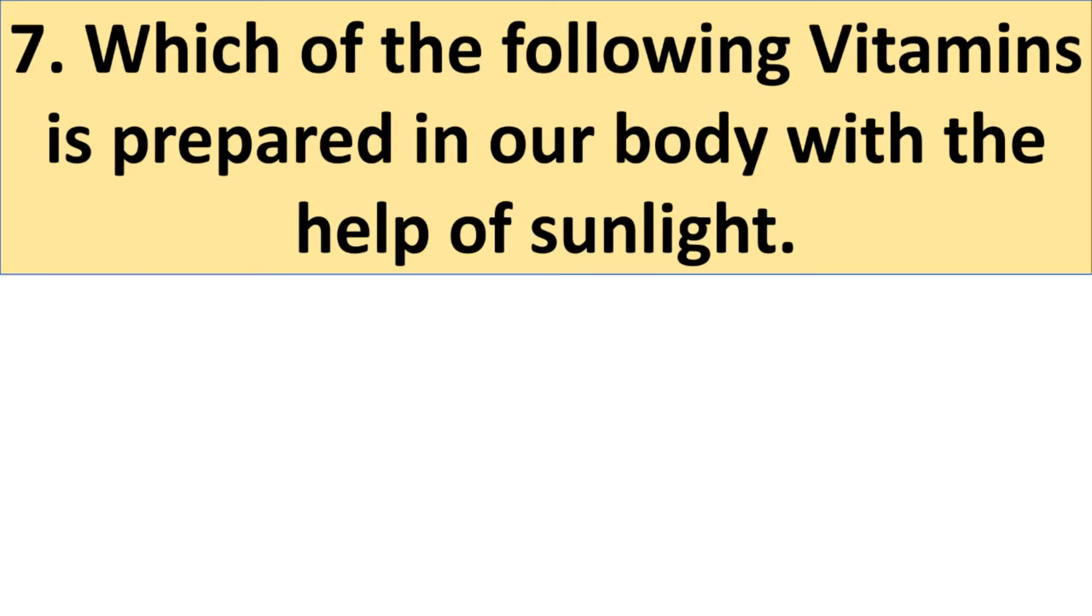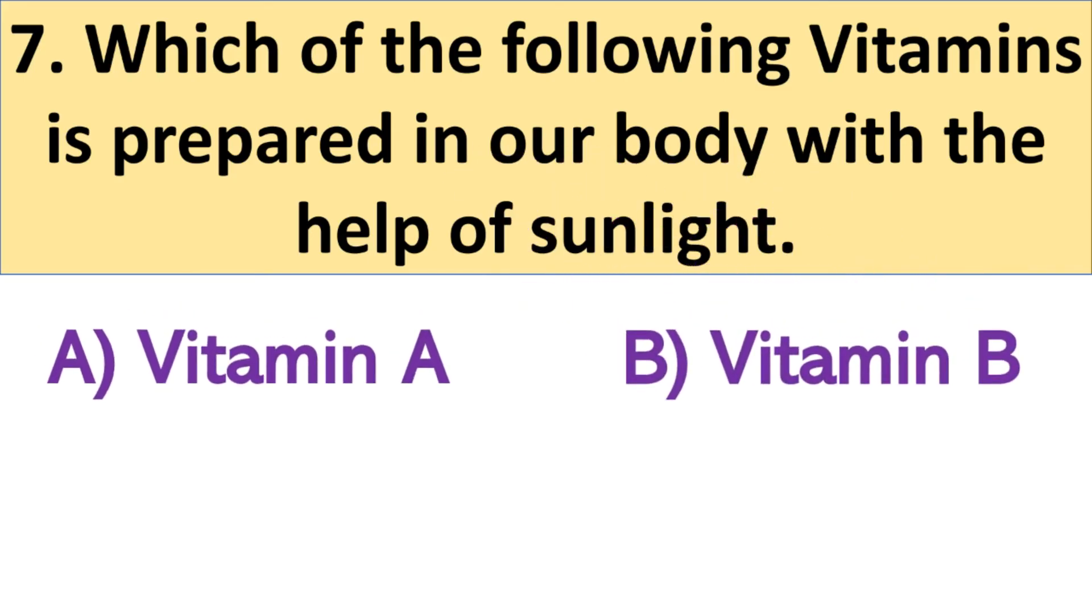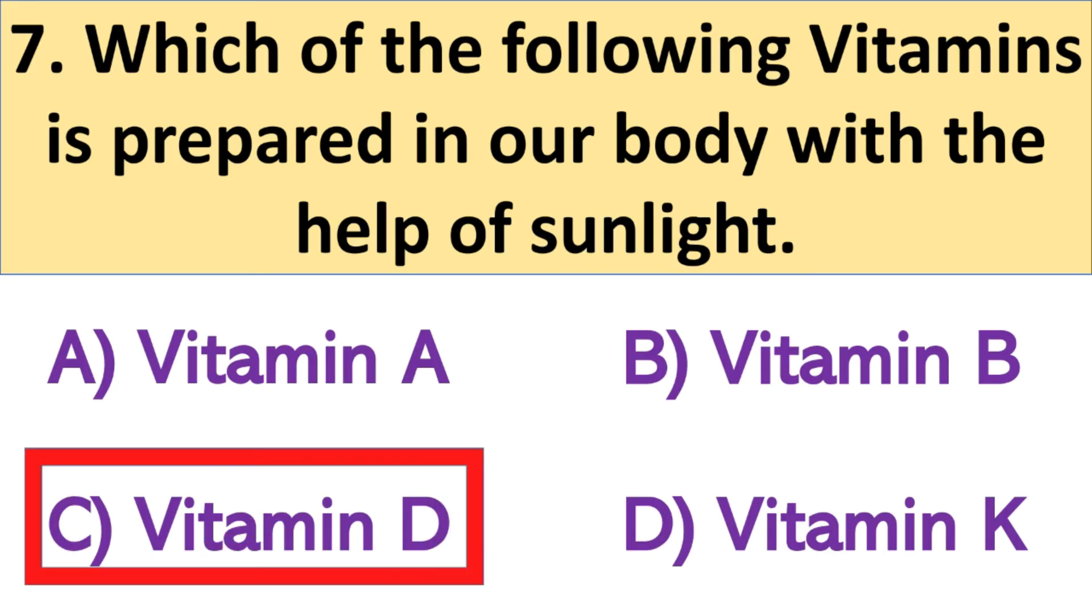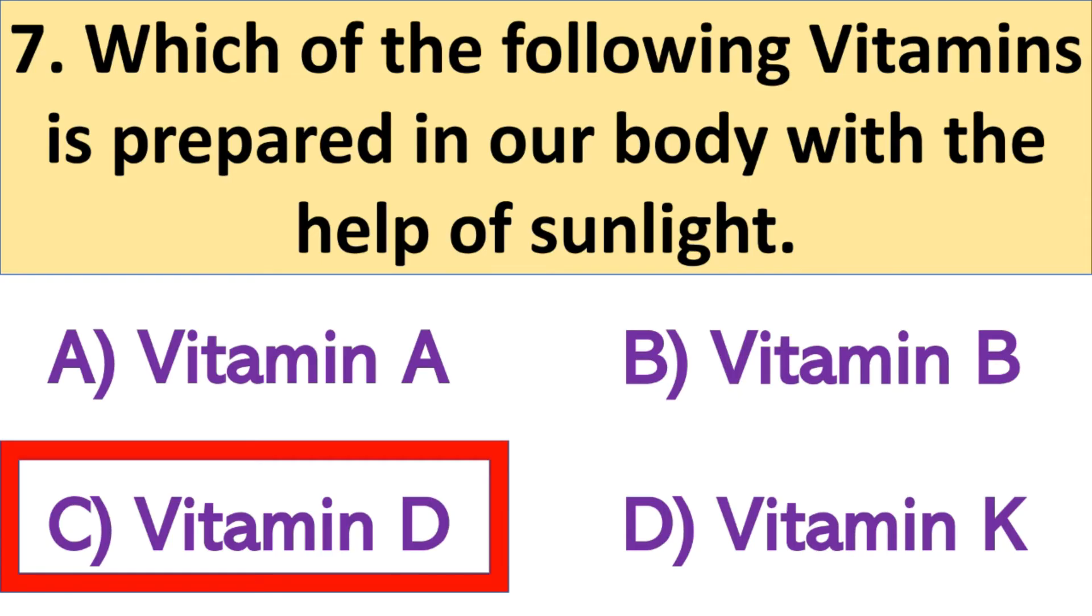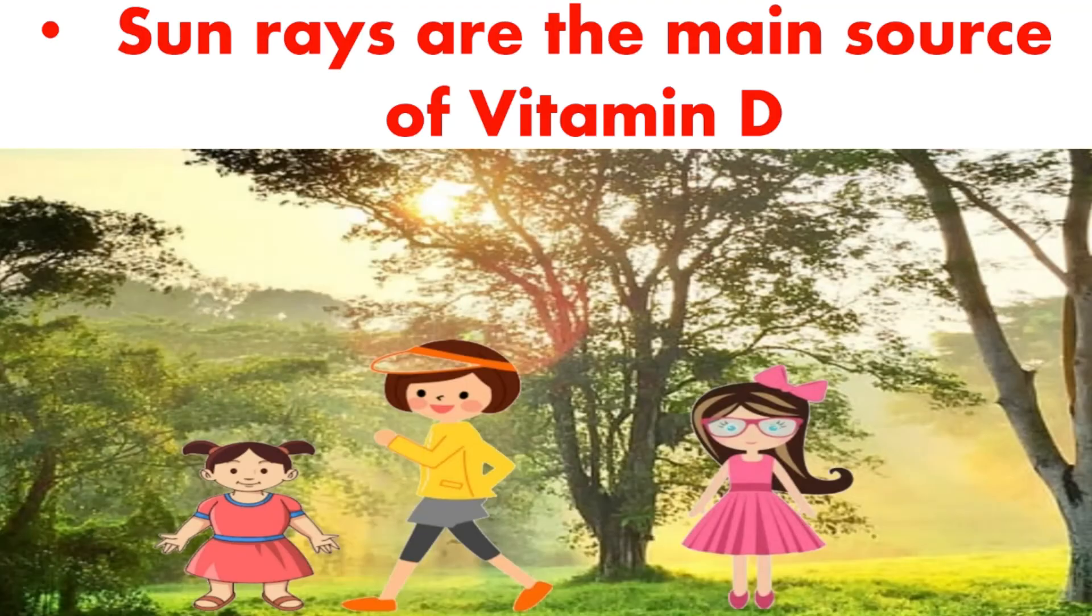Next question, which of the following vitamins is prepared in our body with the help of sunlight? And your options: A. Vitamin A, B. Vitamin B, C. Vitamin D and D. Vitamin K. It's very easy question. And the right answer is Vitamin D. So sun rays are the main source of vitamin D.